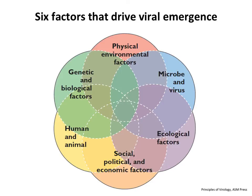There are a number of factors that drive emergence — what makes viruses go from animals to people. These include physical and environmental factors, the virus itself changing, ecological factors, social, political, and economic factors, human-animal contact such as domesticated pigs and chickens being good sources of influenza, and genetic and biological factors. This has always happened as long as humans and pre-humans have been around, as animals also pick up viruses from each other.